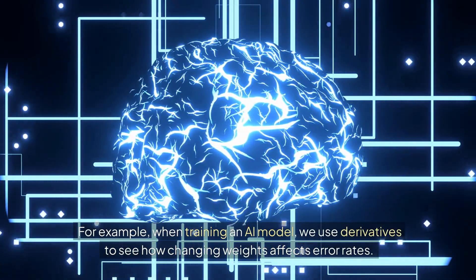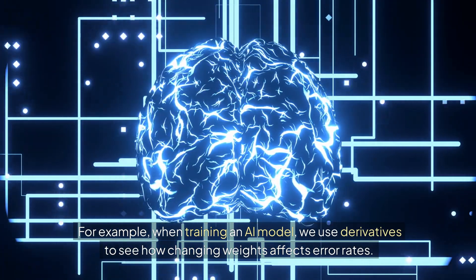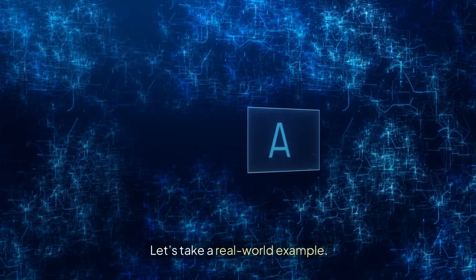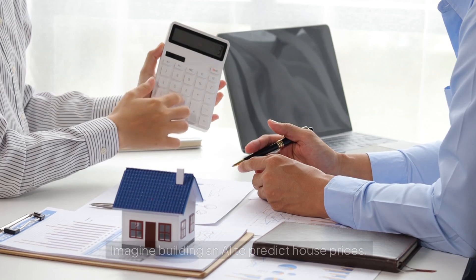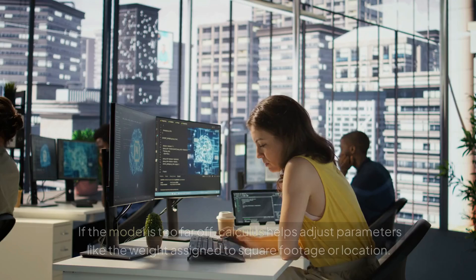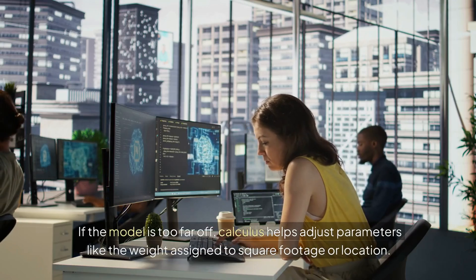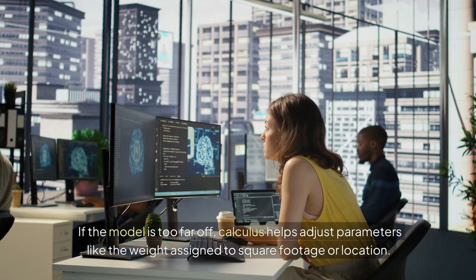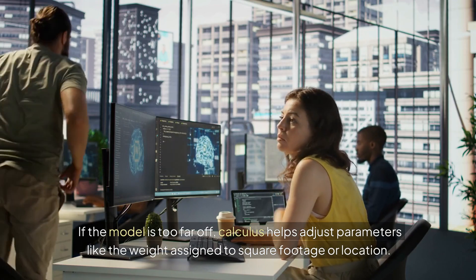Let's take a real-world example. Imagine building an AI to predict house prices. If the model is too far off, calculus helps adjust parameters like the weight assigned to square footage or location.